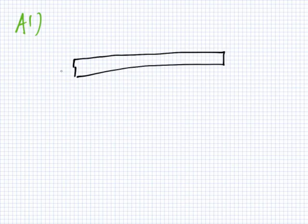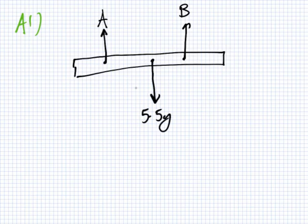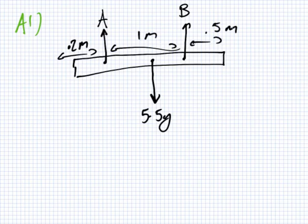You have a table and you have your reaction here, A, and a reaction here at B. And then you have a weight in the middle of 5.5G. And this is 0.2 of a meter, and this here is 1 meter, and this here is 0.5 of a meter. And this question is find the force A and B.